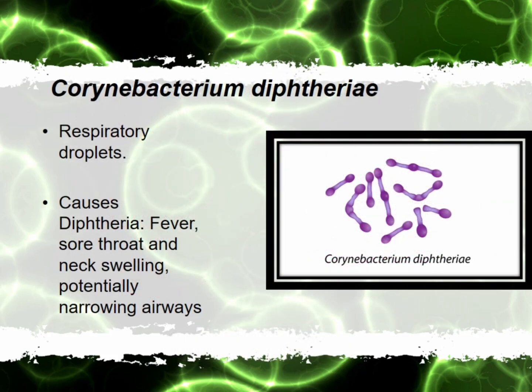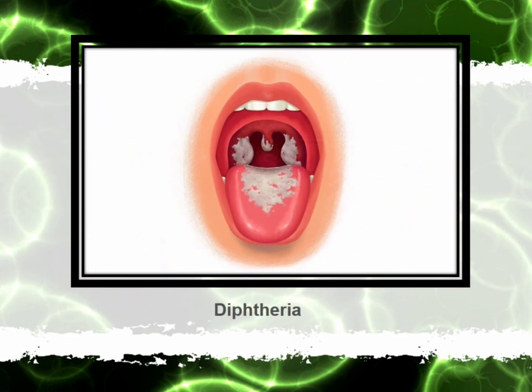Lastly, Corynebacterium diphtheriae — this club-shaped bacteria can be transmitted from droplets of infected ones sneezing or coughing. Corynebacterium diphtheriae causes diphtheria. The symptoms of diphtheria are fever, sore throat, neck swelling, and narrowing of the airways. We can see in the picture what is happening when a person is infected with diphtheria.